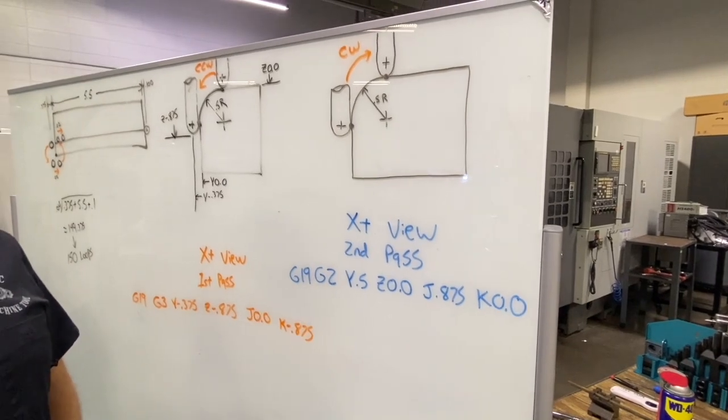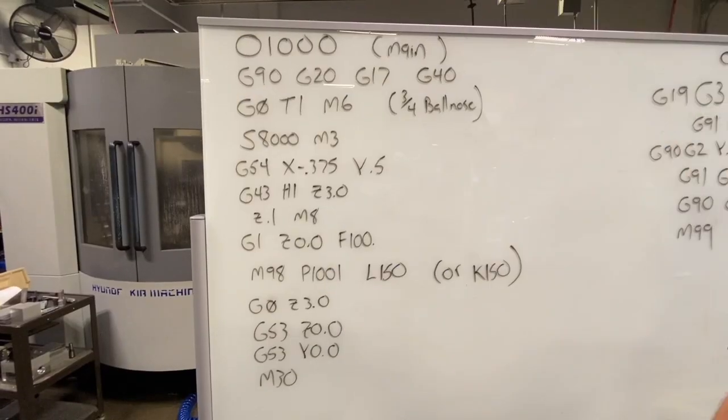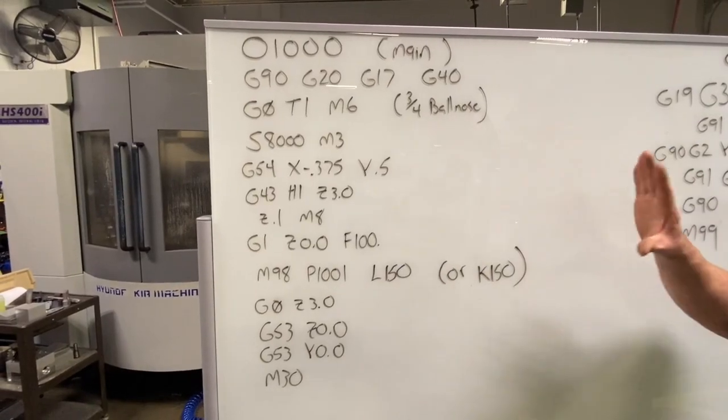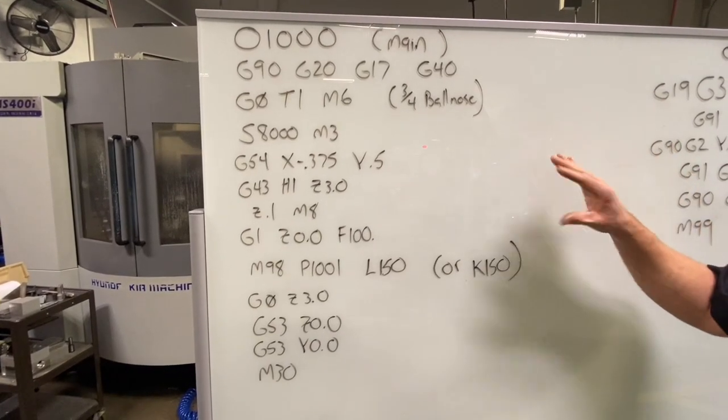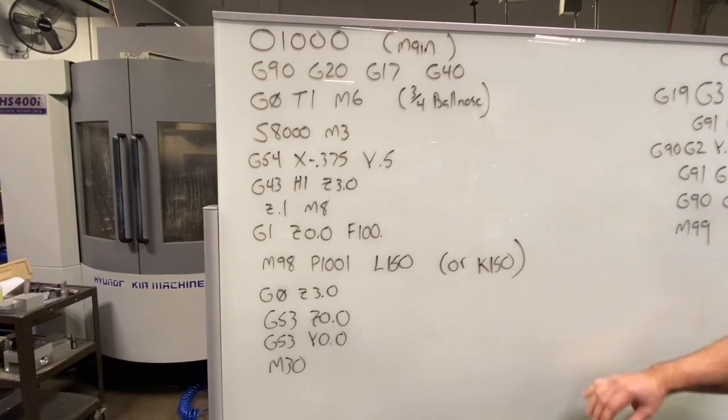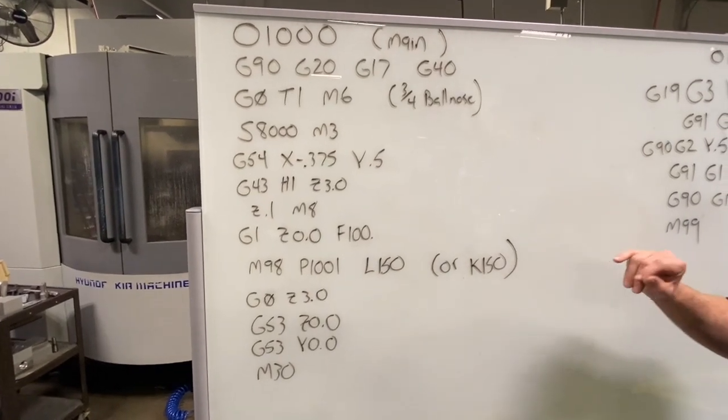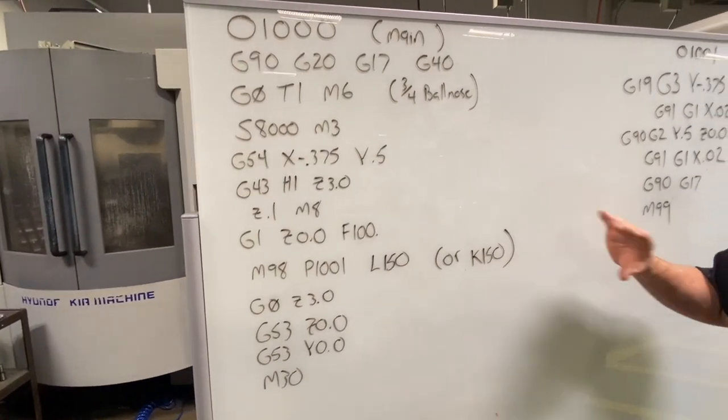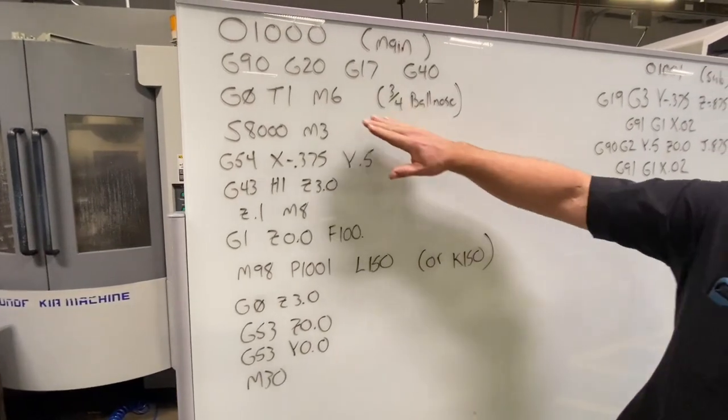So I'm going to flip the board around, we're going to look at the G-code for this program. So here I have our program. We're going to be utilizing again a sub program with a looping command, real similar to our last video machining the angled vice jaw. We're going to throw in a couple more codes here because we're doing some interpolation moves.